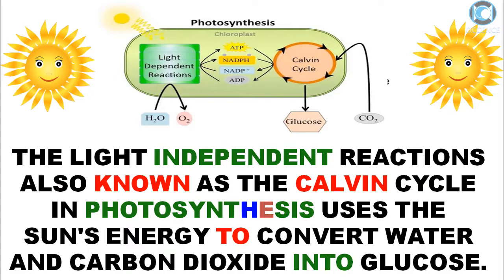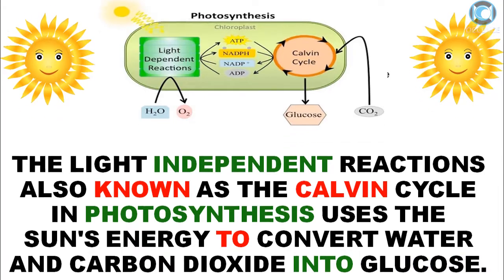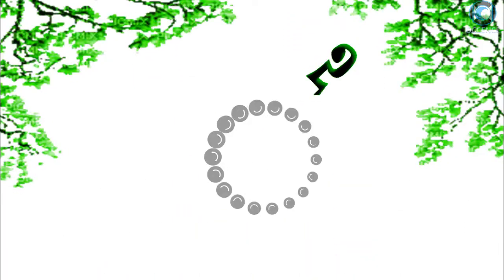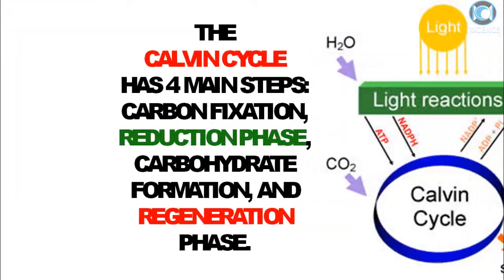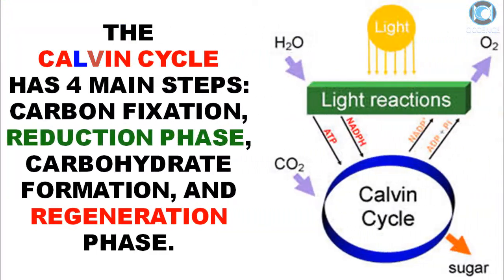Photosynthesis uses the sun's energy to convert water and carbon dioxide into glucose. The Calvin cycle has four main steps: carbon fixation, reduction phase, carbohydrate formation, and regeneration phase.